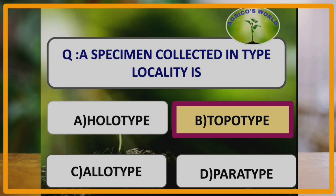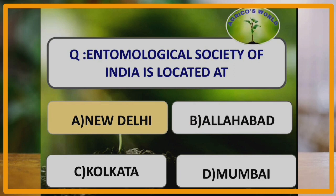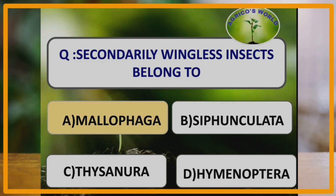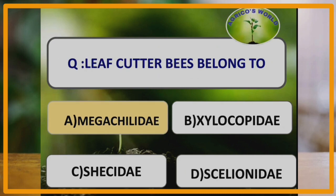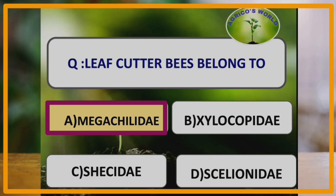If the description of a new species is made on a single specimen of the type series, then it is called a holotype. The Entomological Society of India is located at New Delhi. Secondarily wingless insects belong to the order Mallophaga.